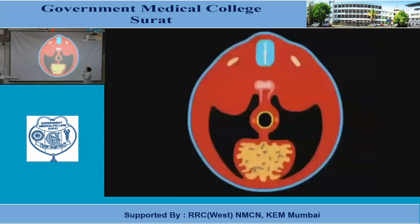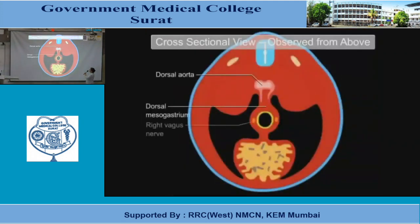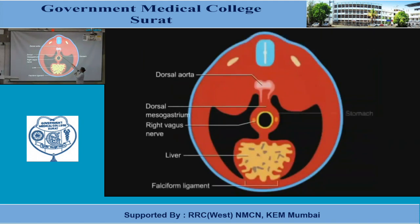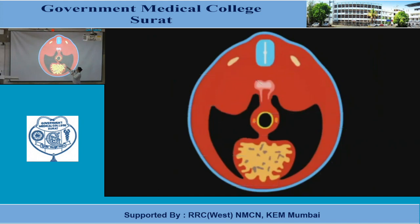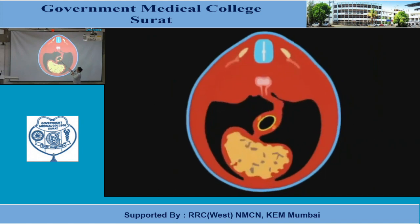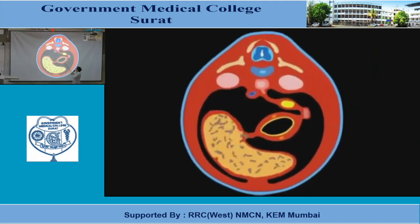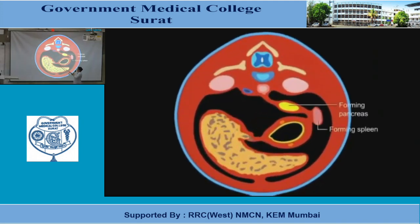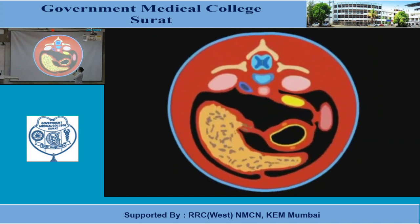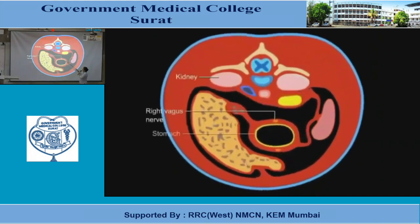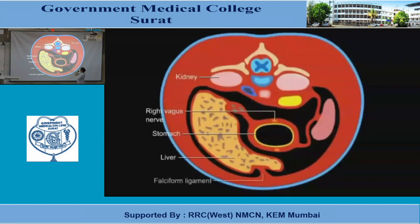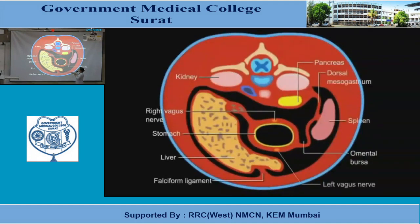Now we will look at the stomach. You have the right vagus and left vagus. Then the stomach rotates, so the right vagus becomes posterior and the left vagus becomes anterior. The liver develops in the septum transversum. This is the stomach. Right vagus becomes posterior, left vagus becomes anterior.